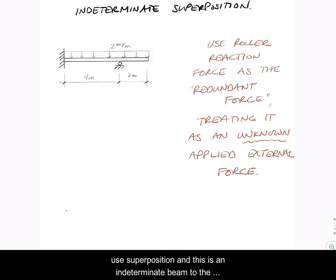So our second solution procedure for this beam is to use superposition. This is an indeterminate beam to the first degree, so we are going to use indeterminate superposition. Our approach is to identify one of the external support forces as a redundant force, and by doing that we are going to treat it as an unknown applied external load.